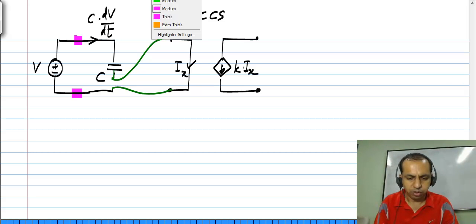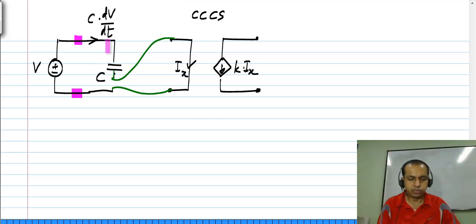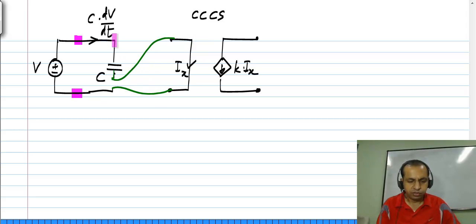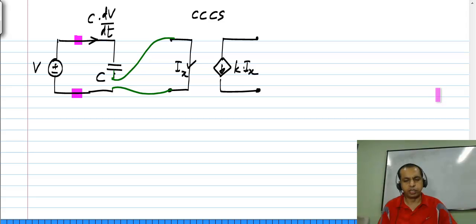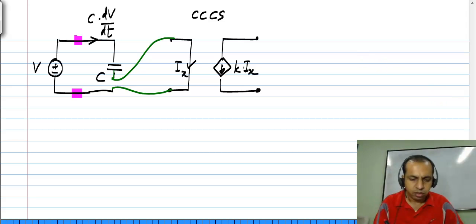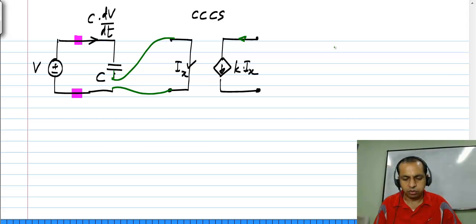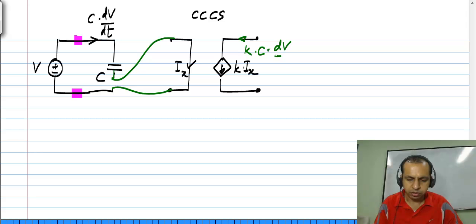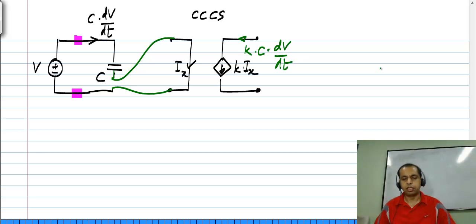You observe that absolutely nothing has changed as far as the capacitor is concerned. The voltage across the capacitor is still V, because this part is a short circuit — it is just a wire. So the current through the capacitor is still C times dV/dT. Now, if you look at the current through the current-controlled current source, it is K times C times dV/dT.